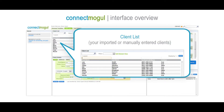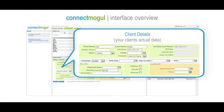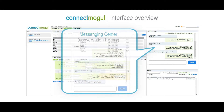After that, we have the client list. The client list consists of all your imported or manually entered client records. Clicking on a client record from the client list will load the data into the client detail window. All incoming and outgoing messages are found in the messaging center, and each client will have their own conversation history.